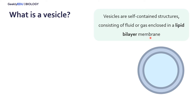A lipid bilayer is when we have our hydrophilic heads, which are water-loving heads, and then our hydrophobic tails in the middle, which are water-fearing — they don't like water.